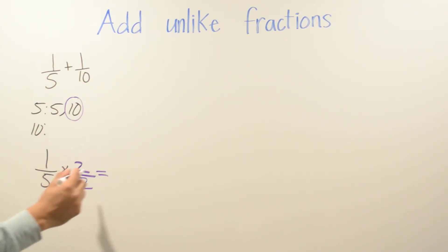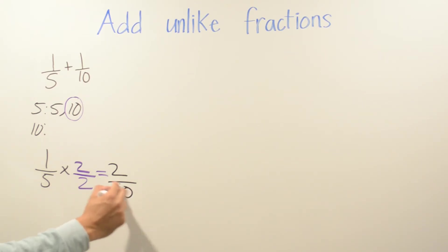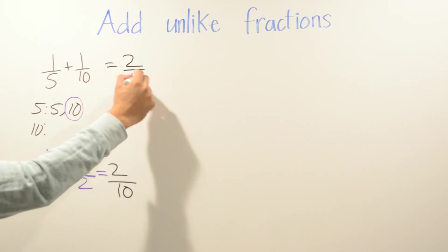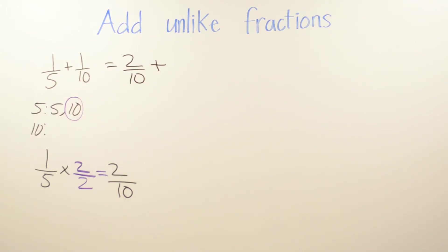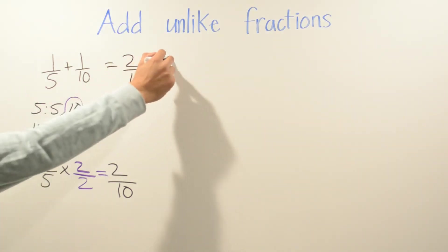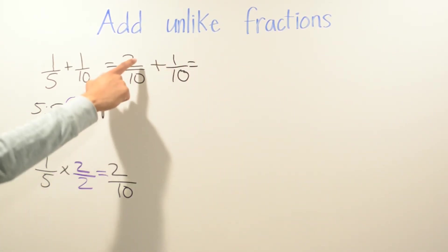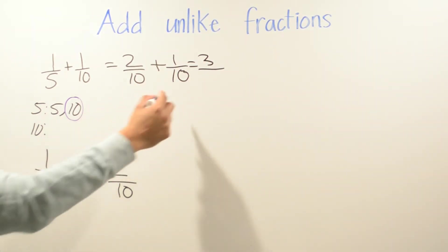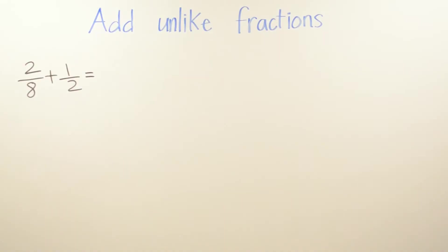So 1 times 2 is 2, and 5 times 2 is 10. This fraction becomes 2/10. For the second fraction, one-tenth, I don't change it — it's already at the least common multiple, so I leave it the same. Now I add: 2 plus 1 is 3, and we don't touch the denominator, which stays as 10. The answer is three over ten.